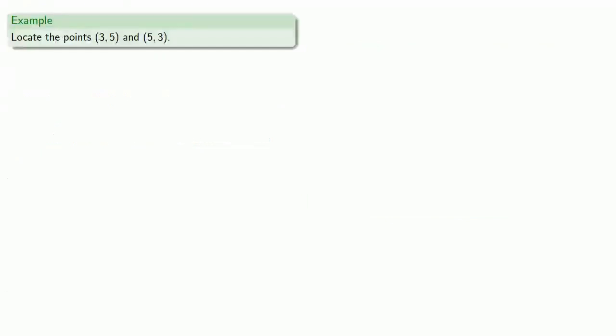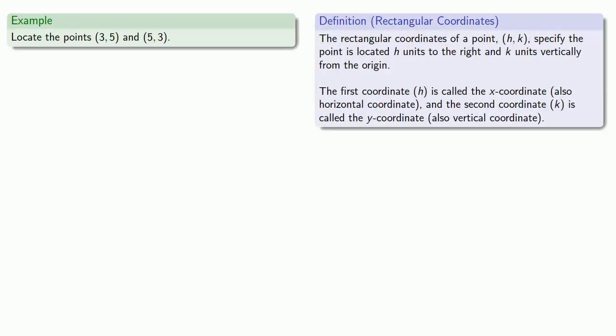So for example, let's locate the points (3, 5) and (5, 3). Definitions are the whole of mathematics, all else is commentary, so let's pull in our definition of rectangular coordinates. And this says that the first point, (3, 5), is 3 units to the right and 5 units vertically from the origin. So to graph this point, first we need to identify where the origin is. How about here? It's also convenient to mark out the principal directions, which would be to the right and upward.